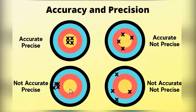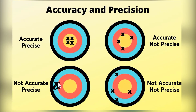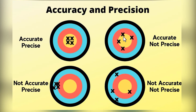Measurements can be precise but not accurate if they are not close to the actual value. If they are accurate, they are close to the actual value. Precision means the measurements are consistent with each other.